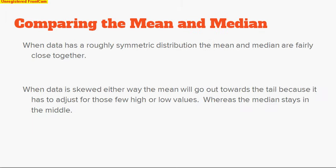Comparing the mean and median: when data has a roughly symmetric distribution, the mean and the median are fairly close together. When data is skewed either way, the mean will go towards the tail because it has to adjust for those values that are extremely high or extremely low. Let's draw a kind of symmetric data here. Nice and symmetric—left side, right side look about the same. In this case, the mean (x-bar) and the median (capital M) will fall at about the same place directly in the middle.